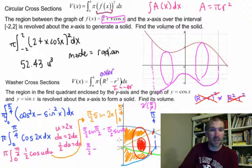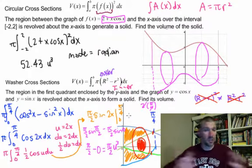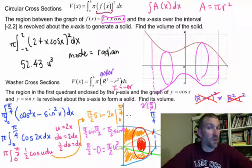So the sine of pi over 2 is 1. So that's going to be pi over 2 times 1 minus pi over 2 times the sine of 0 is 0. And so for this particular guy, we're going to get pi over 2 units cubed.